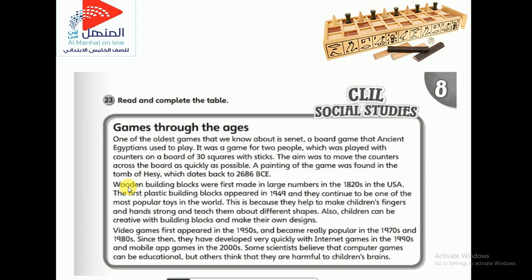Everyone knows building blocks — we've all played with them. Wooden building blocks were first made in large numbers in the 1820s in the USA. Then they developed into plastic ones — the first plastic building blocks appeared in 1949, and they continue to be one of the most favorite toys in the world. This is because they help make children's fingers and hands strong, teach them about different shapes, and allow children to be creative by designing their own structures.